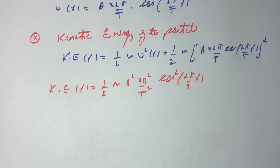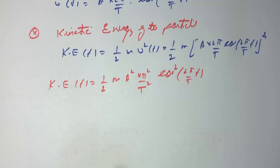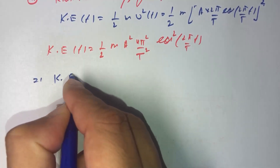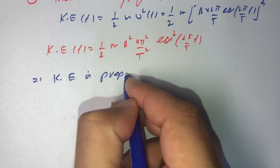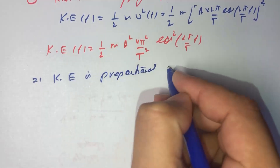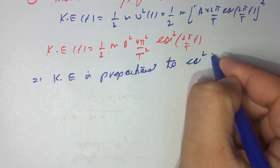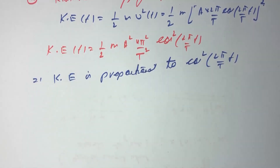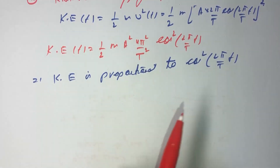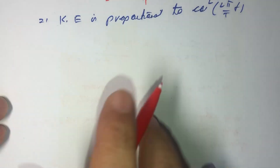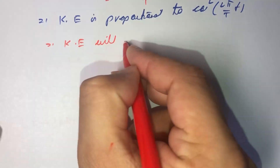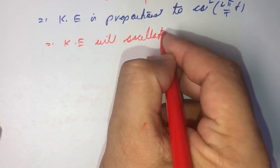From here we can clearly see that our kinetic energy is proportional to cos²(2π/T · t). Therefore this kinetic energy is going to oscillate between zero and its maximum value.